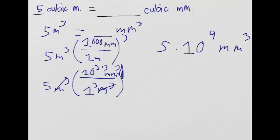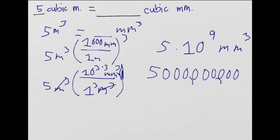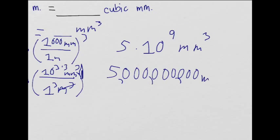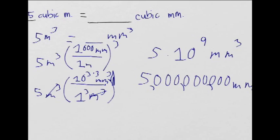Since that's ten to the ninth, that's nine zeros. Five times ten is 50, so that's a five followed by nine zeros — five billion millimeters cubed, or five billion cubic millimeters.